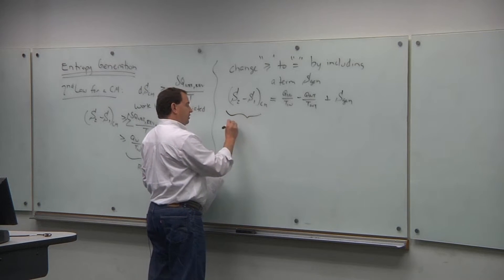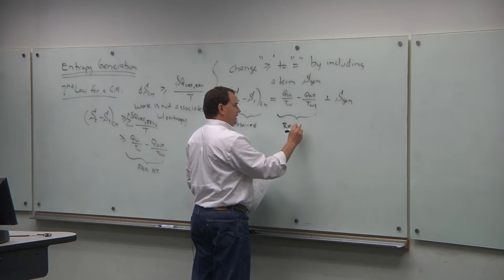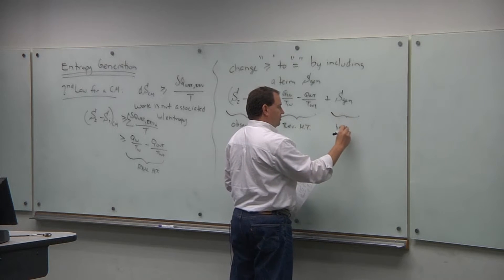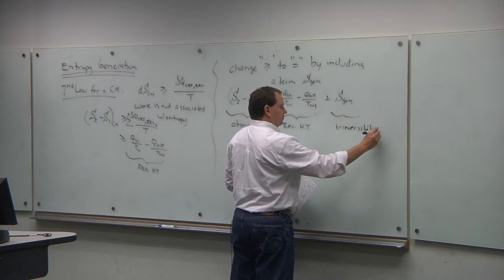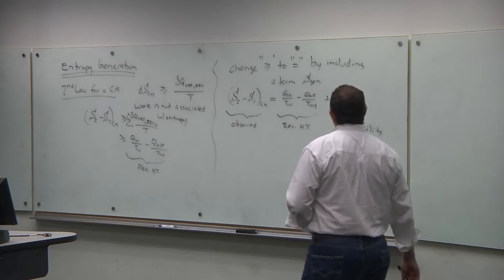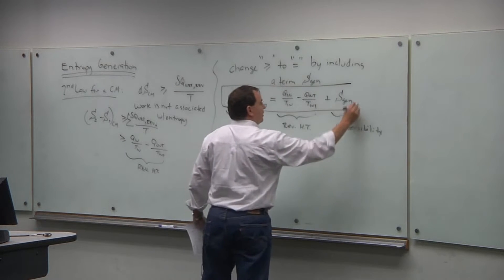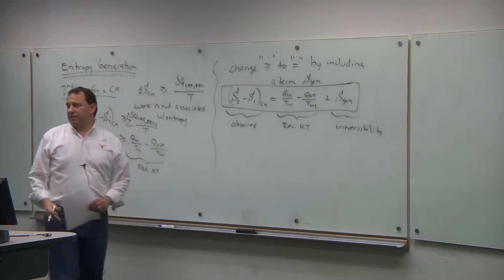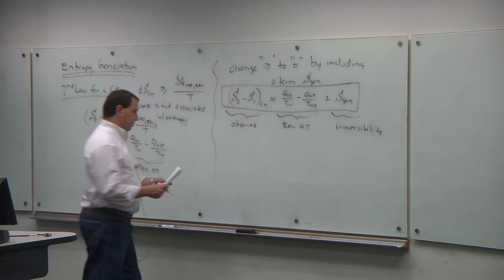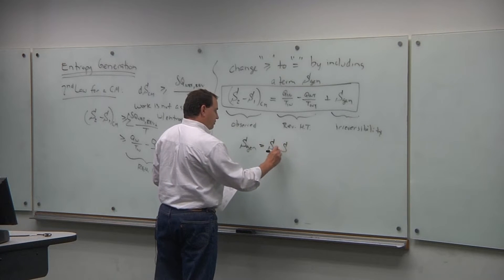We call this the observed change in entropy: the change in entropy associated with reversible heat transfer, plus the entropy generation which comes from irreversibilities. This is the second law with a little more clarity compared to before. We often want to find out what entropy is generated — how much entropy does the system generate.